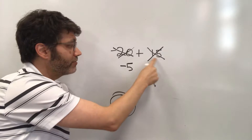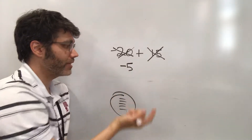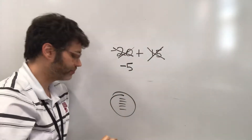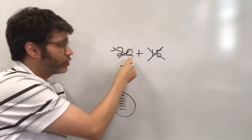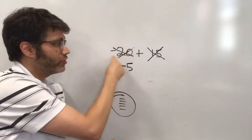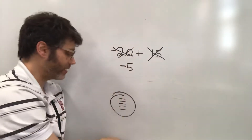So when combining negative 20 plus positive 15, you're going to end up with something that's negative, because the magnitude of 20 overtakes the 15.